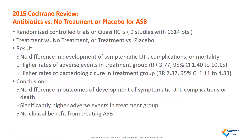A 2015 Cochrane review analyzed patients being treated for asymptomatic bacteria. It includes patients receiving antibiotics versus no antibiotics and patients receiving antibiotics versus placebo. The results showed that there was no difference in the development of symptomatic urinary tract infections, complications, or mortality in patients who received antibiotics. There were, however, higher rates of adverse events in this group. The conclusion was that there was no difference in outcomes, but significantly higher adverse events in patients who received antibiotics for asymptomatic bacteria.